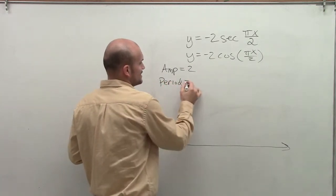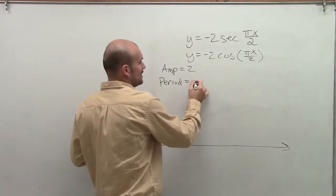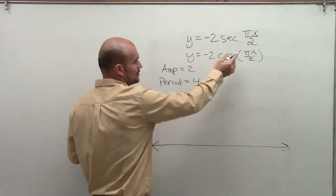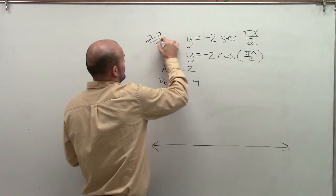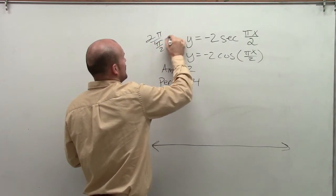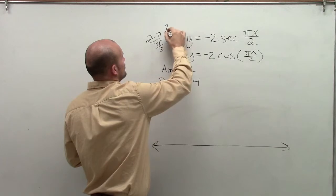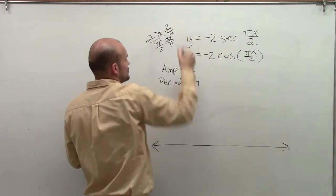My period, in this case, is going to be 4, as I'm going to do 2 pi divided by pi halves. So you multiply by 2 over pi, so you get 4.